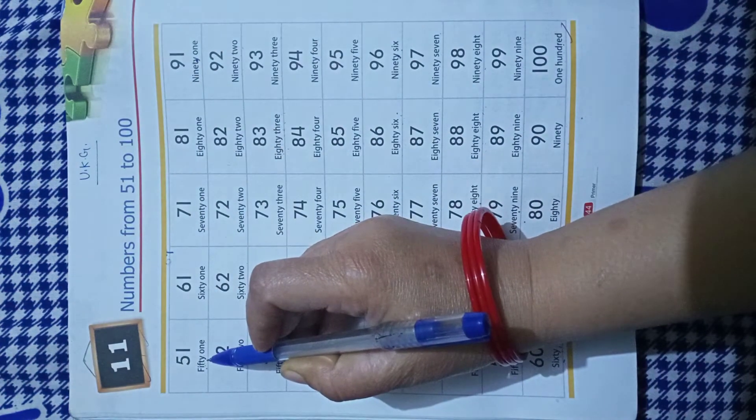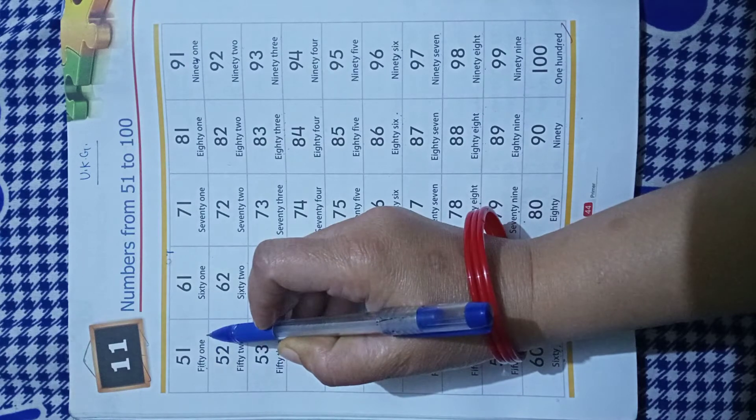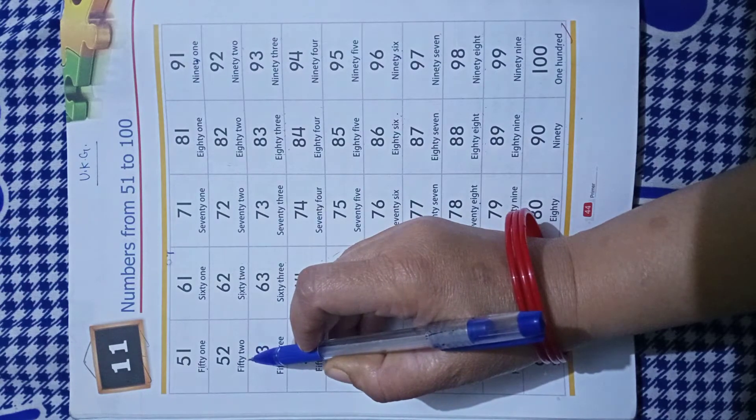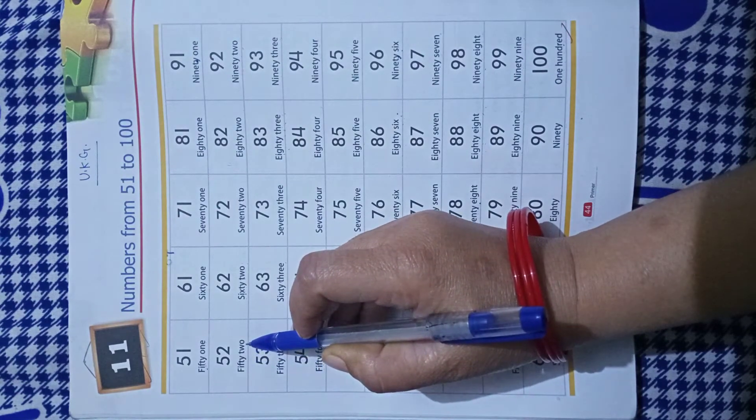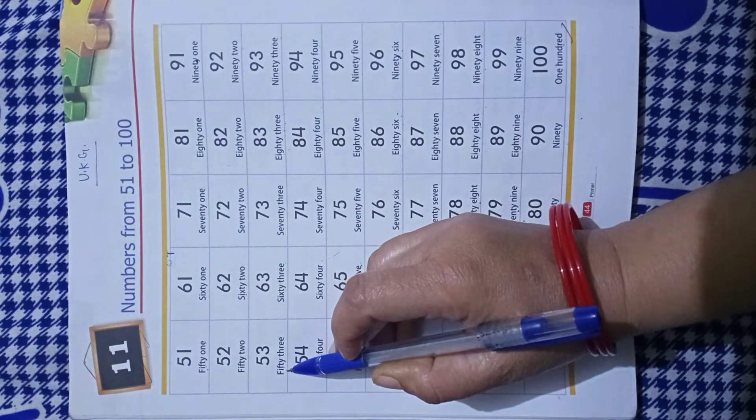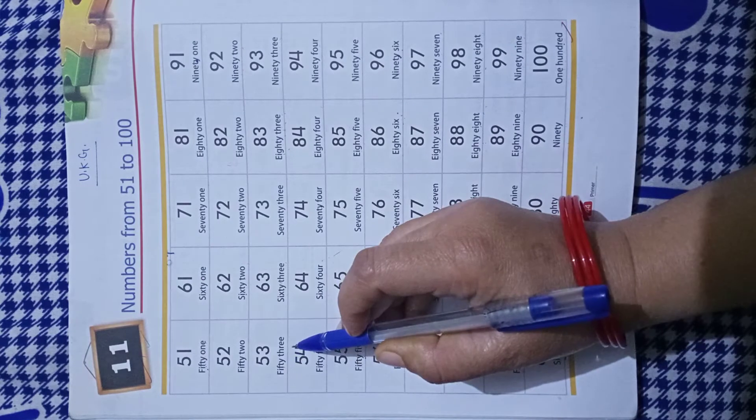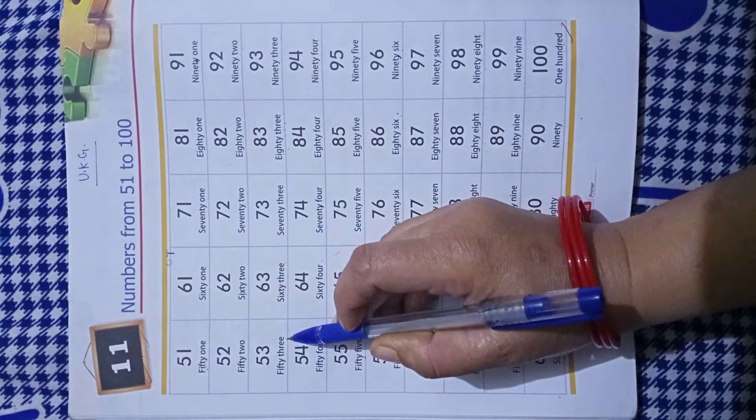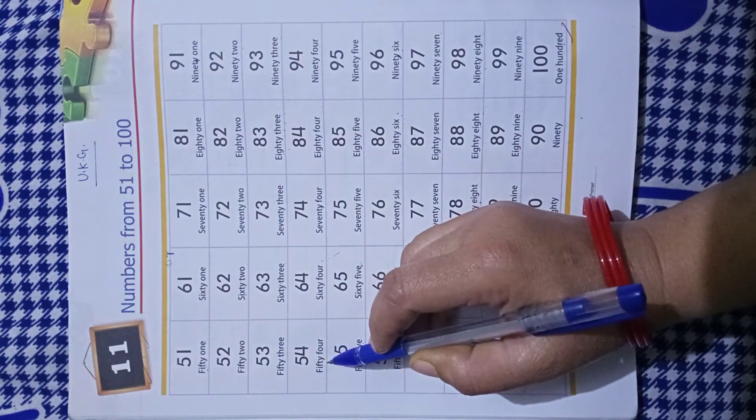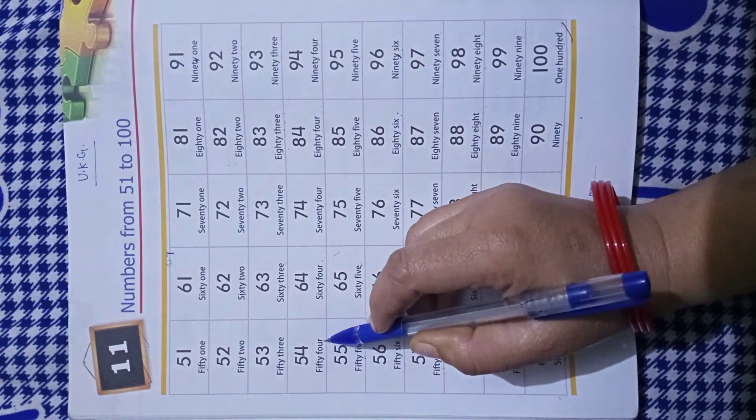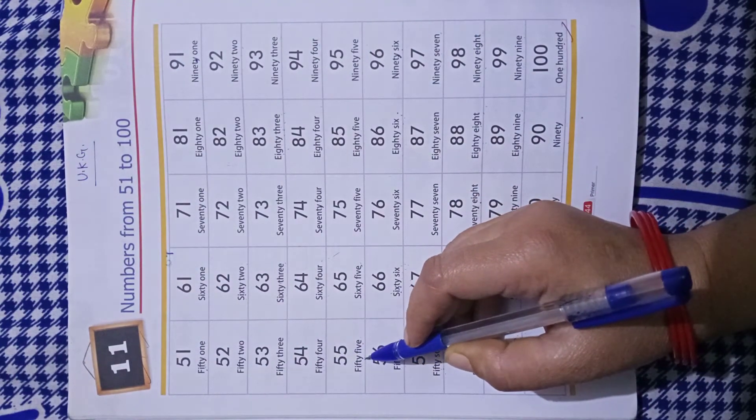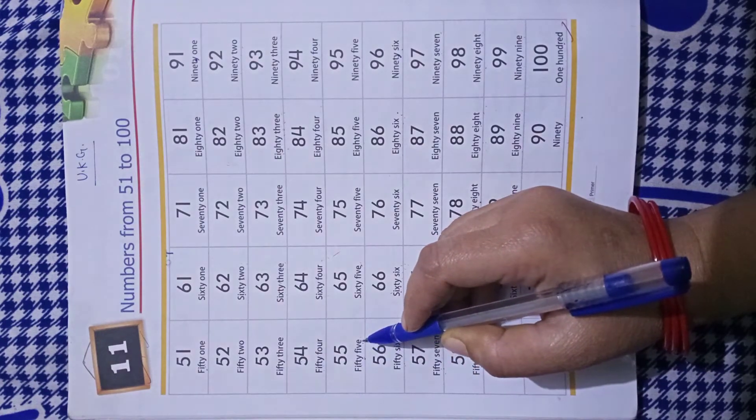FIFTY-50 ONE-1-51, FIFTY-50 TWO-2-52, FIFTY-50 THREE-3-53, FIFTY-50 FOUR-4-54, FIFTY-50 FIVE-5-55.